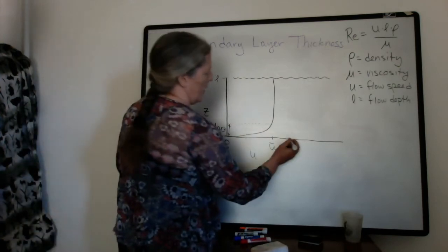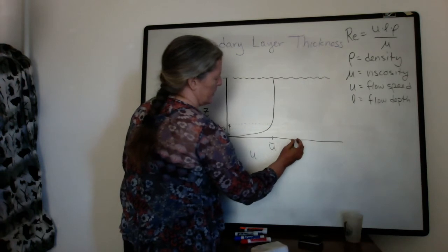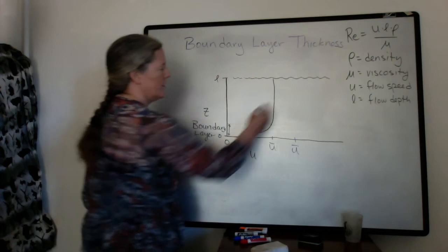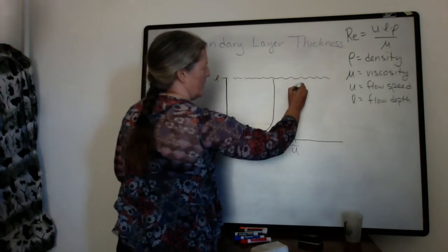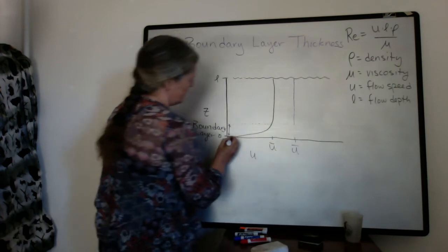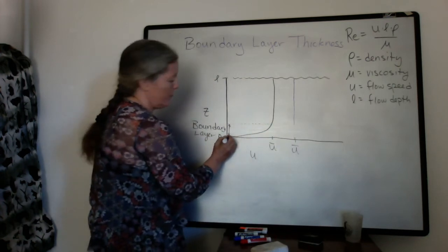So if we have the purple line here represents a different, a faster average flow speed. Here we still have the flow being zero right at the surface.